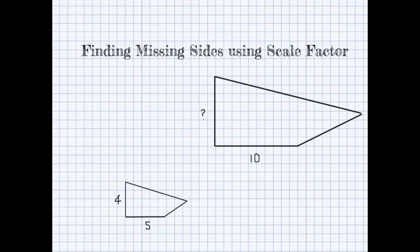Here we have two similar geometric figures. As you can see, this side with a length of 10 corresponds with this side of length 5. This means we can use these measurements to find the scale factor. If we take the bigger side — 10 — over the smaller side — 5 — this gives us the ratio of the two corresponding sides, which is the definition of scale factor. This ratio equals 2, which is the scale factor by which the smaller figure is multiplied to become the bigger figure.